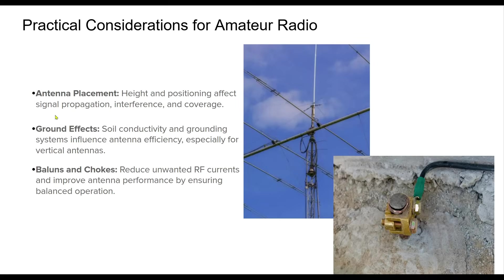Antenna placement is a critical factor in amateur radio operation. Elevating an antenna improves signal range, while avoiding obstructions minimizes interference. Ground effects play a key role in vertical antenna performance — good soil conductivity enhances efficiency, while poor grounding can introduce signal losses. Baluns and chokes are essential in many antenna designs to prevent unwanted RF currents from affecting performance. Proper installation and placement can greatly enhance communications reliability.